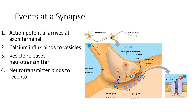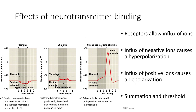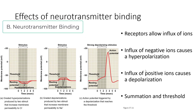The neurotransmitters will travel across the synaptic cleft, which is a very short distance, and bind to receptors on the postsynaptic cell. When these neurotransmitters bind to these receptors, they can cause an influx of different ions.